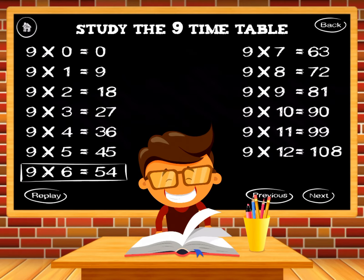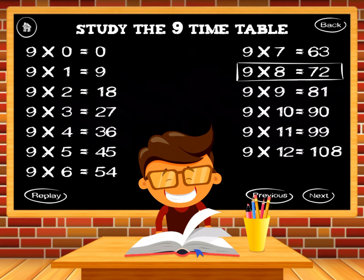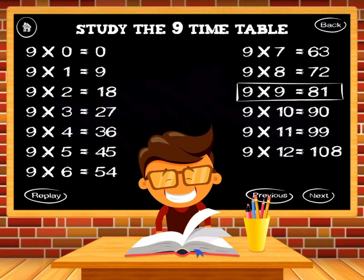9 times 6 equals 54. 9 times 7 equals 63. 9 times 8 equals 72. 9 times 9 equals 81.